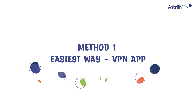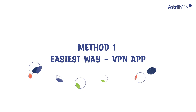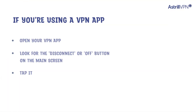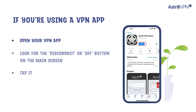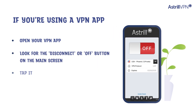Method 1: the easiest way — your VPN app. Let's start with the easiest method. If you're using a VPN app, open it, look for the disconnect or off button on the main screen, and tap it.